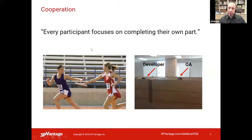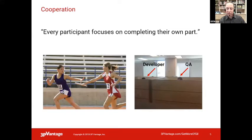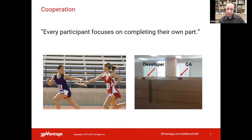Now let's look at cooperation. In cooperation, we still have a shared objective, but every participant focuses on completing their own part. The classic example is the relay race — everybody is part of the team winning, but each individual has a part to play, and when that part is over, it's over. In software teams, the developer does one piece, another person does the next, in separate phases with different roles — every participant focuses on completing their own part.